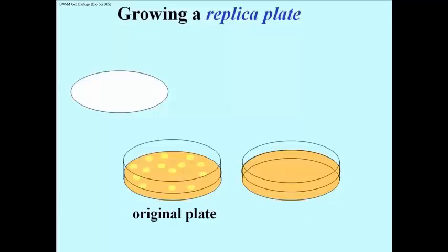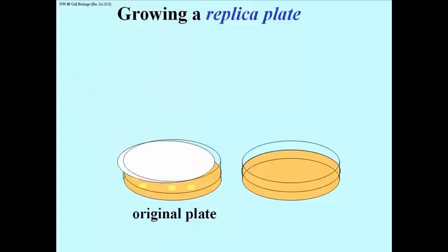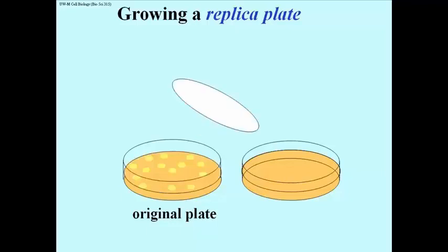So now you have grown this plate — that's the original plate. What you've done is place a filter on top of the colonies to produce a replica. You put the filter on top, and the filter is going to pick up a few cells from every colony.